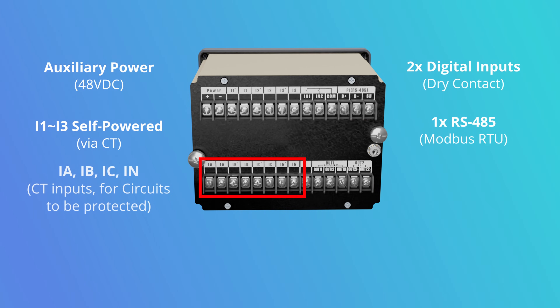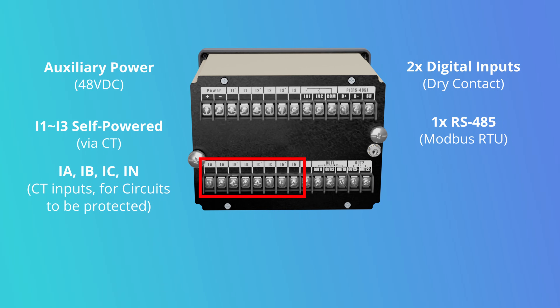IA, IB, and IC are the terminals for connecting CTs on the circuits to be protected from overcurrent, overload, unbalance, etc. IN is the terminal for connecting a neutral CT or external zero-sequence CT for ground fault protection.